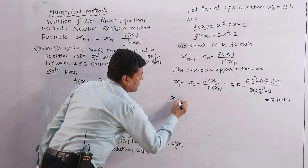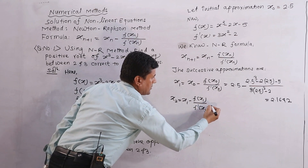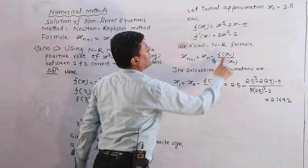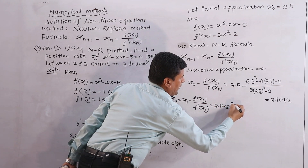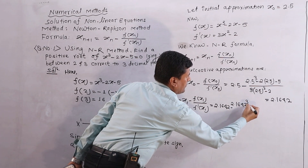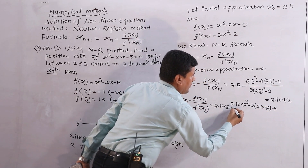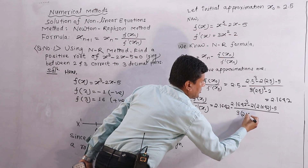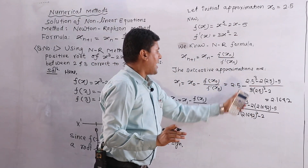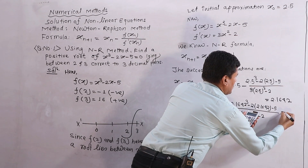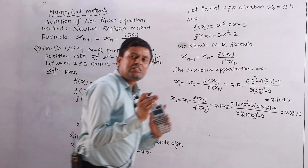For x₂: x₂ = x₁ − f(x₁) / f'(x₁) = 2.1642 − (2.1642³ − 2×2.1642 − 5) / (3×2.1642² − 2), which gives x₂ = 2.0971.